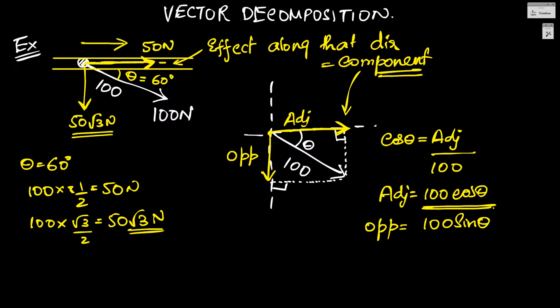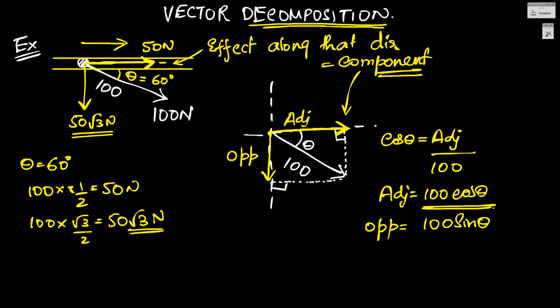Whatever we did just now is called vector decomposition. Decomposition is a concept where we take one vector and divide it into two perpendicular parts. It need not be two — it can be divided into any number of perpendicular parts. For example, we live in a three-dimensional world, so we can divide it into three perpendicular parts. But for now, let's stick to just two perpendicular parts where our vector is confined to a plane. These two parts are called the components or effects of the vector.